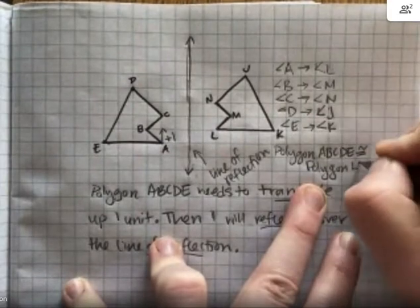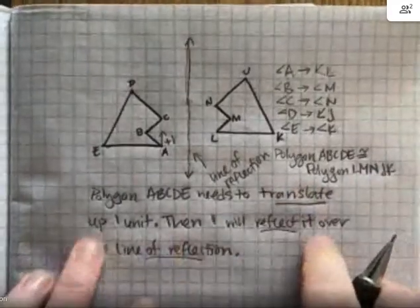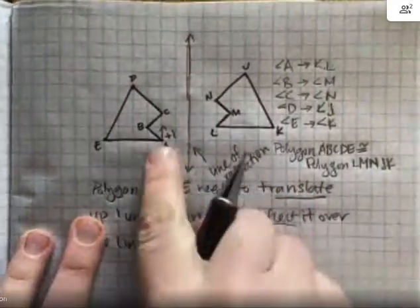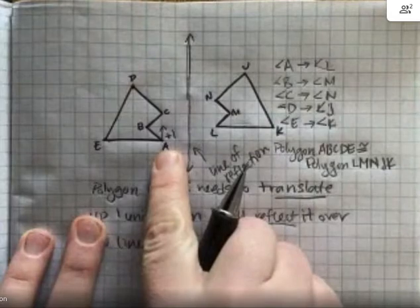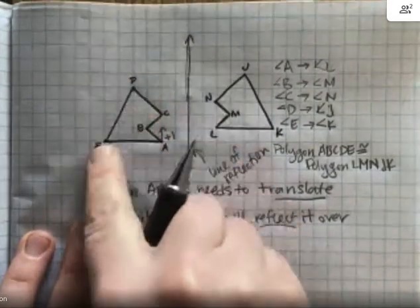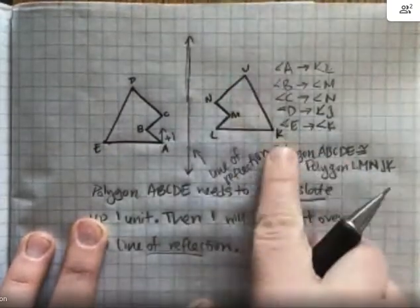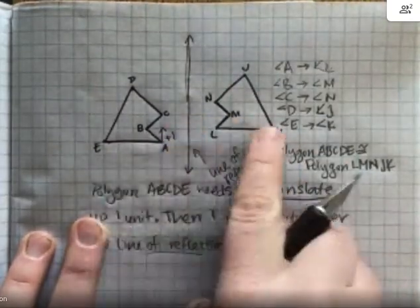But what's important is that we know that when I am making my congruence statements, I'm making it based on the corresponding points. And I have corresponding point A, B, C, D, E corresponding to L, M, N, J, K. And I have proven that through our congruency.